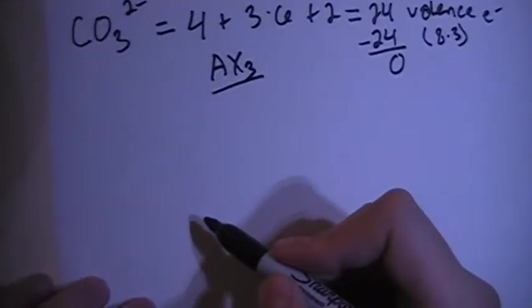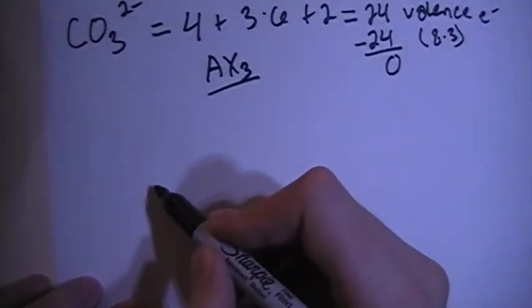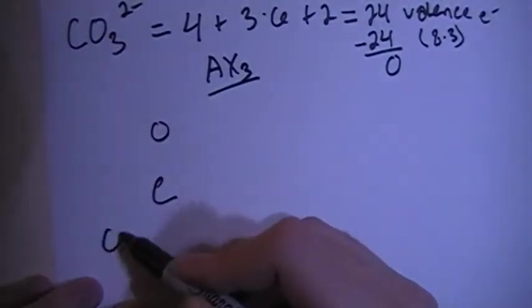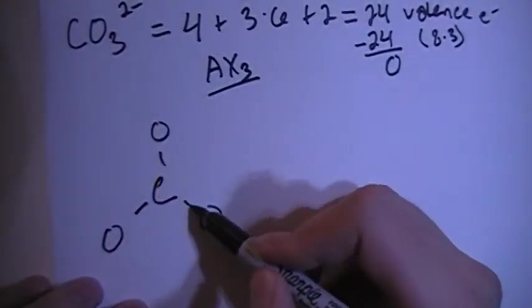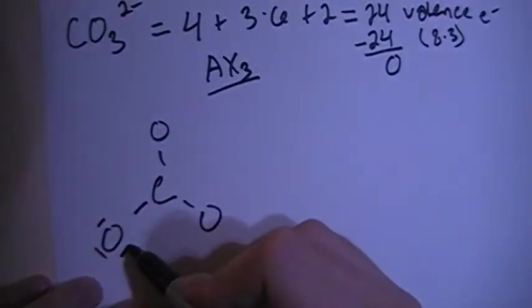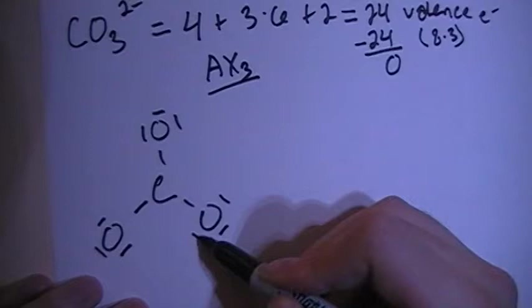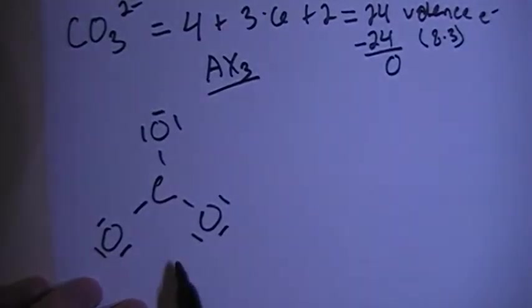Carbon's going to be your central atom, so we're going to have carbon in the center with 3 oxygens, 1, 2, 3. We can go ahead and attach them all with single bonds, and then fill in the remaining electrons. Remember, each one of these lines represents 2 electrons, so there's our 24.